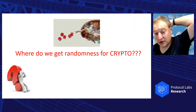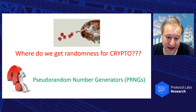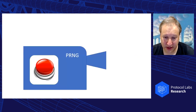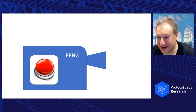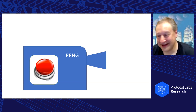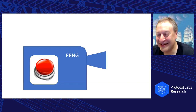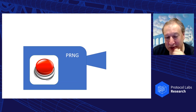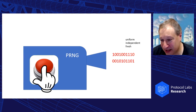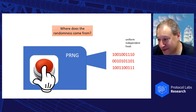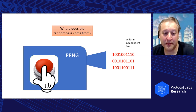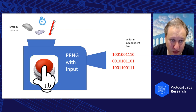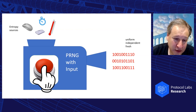The question is: where do we get randomness for crypto? We use random number generators — this is a common design principle. From the user's perspective, a random generator is like a button: you press it and get a random number, press it again and get another. But we're engineers and need to design them. The random number generator needs an input — we call it a PRNG with input. The input comes from what we call entropy sources, things we heuristically believe have some uncertainty, like mouse movements, keyboard timing, and temperature.